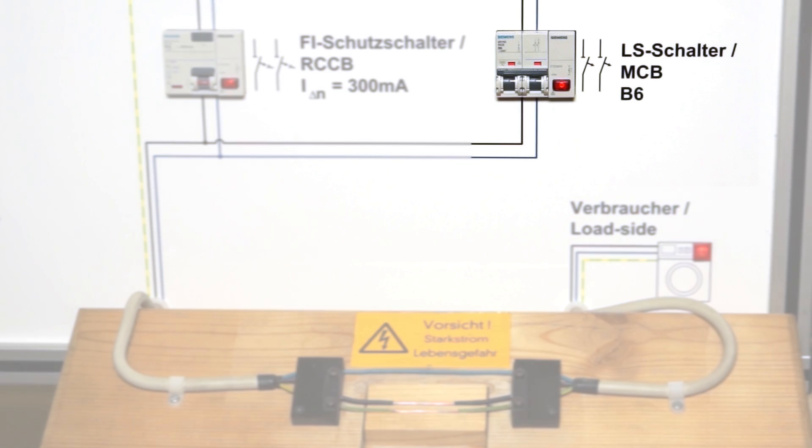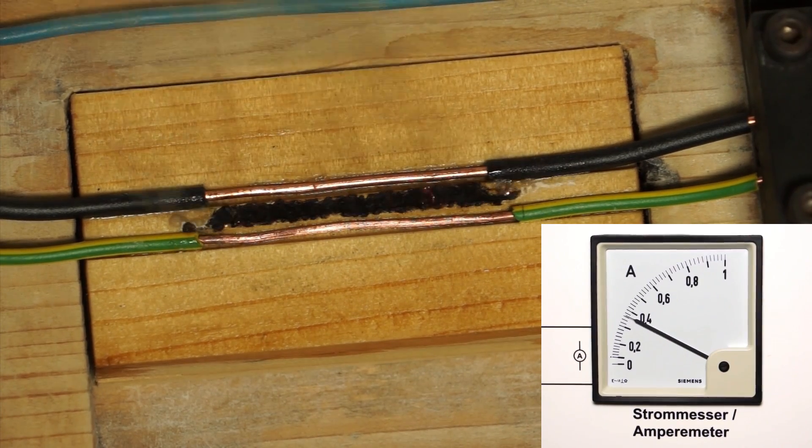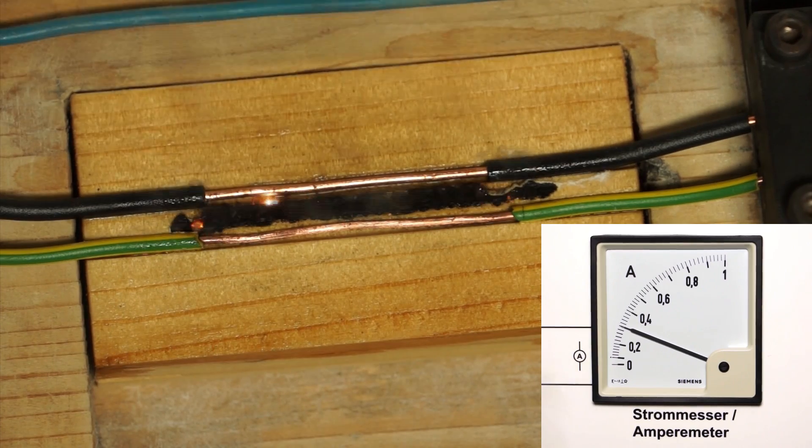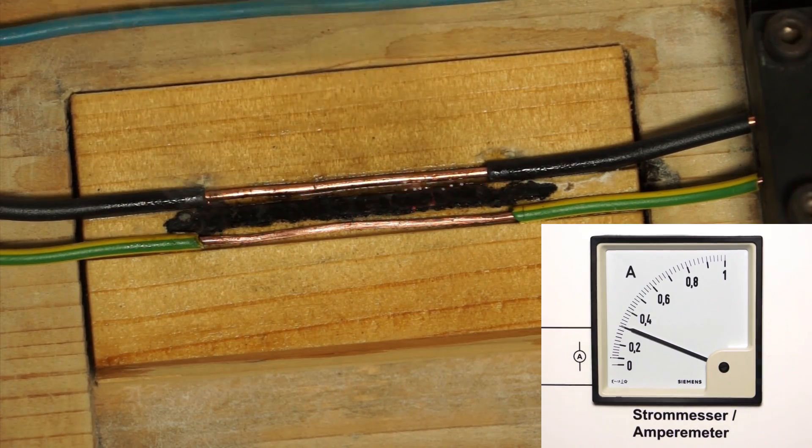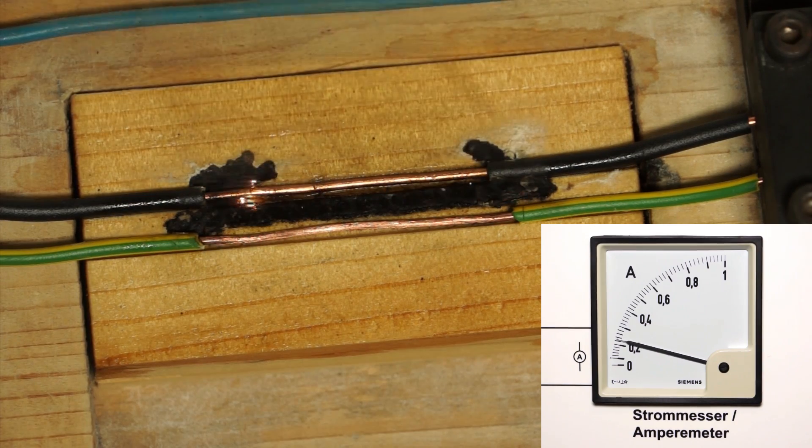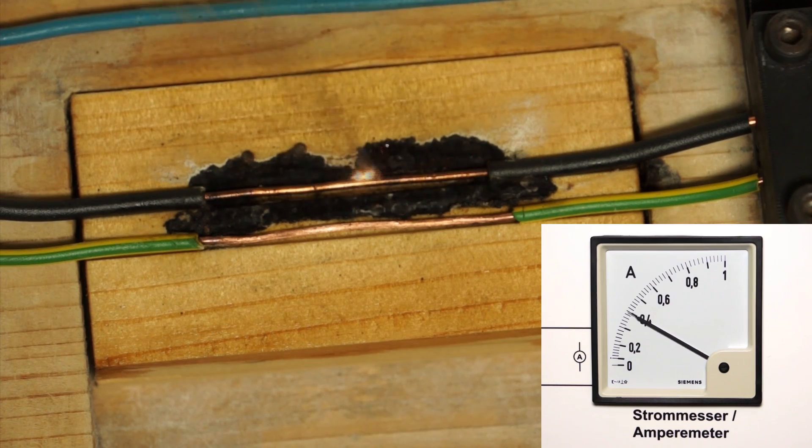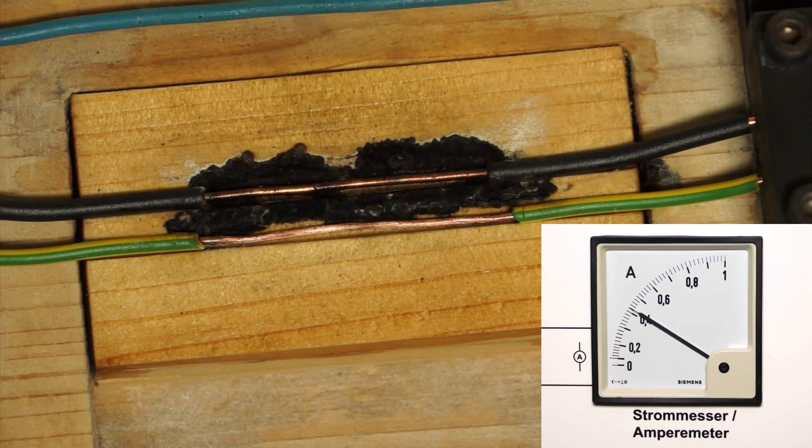In this case, a miniature circuit breaker cannot protect against electrically ignited fires as it only trips at much higher currents. The insulation fault simulated here can easily lead to a smoldering fire or even a full blaze. RCCBs with a rated residual current of less than 300 milliampere could prevent this fire and consequently provide preventive fire protection.